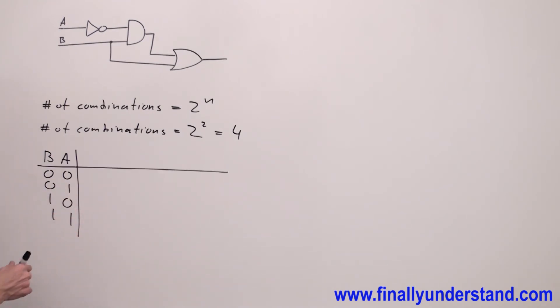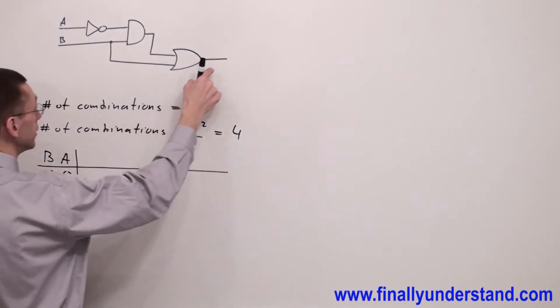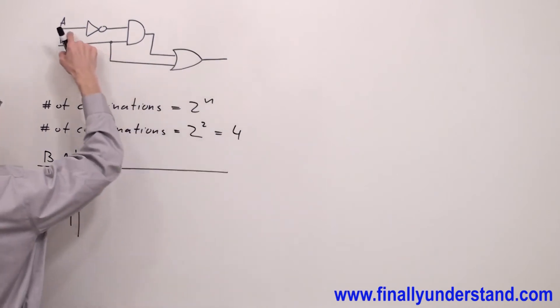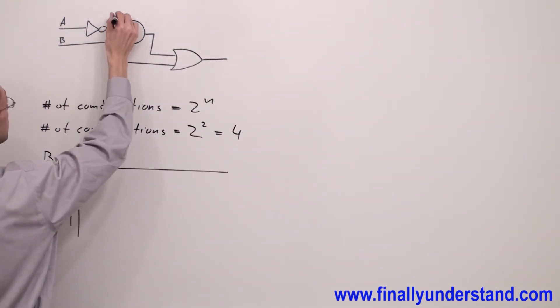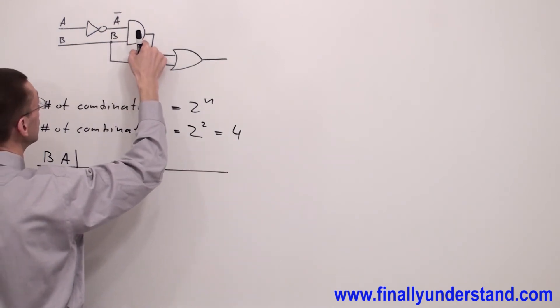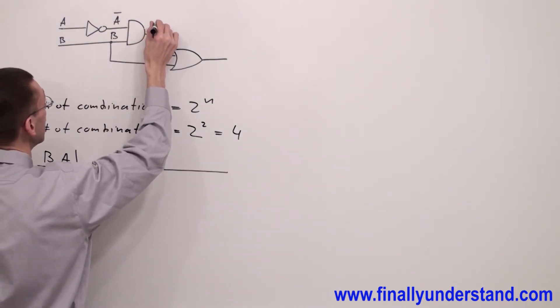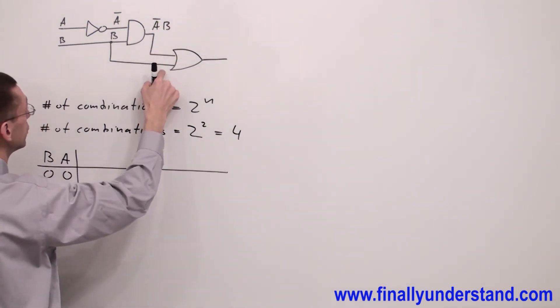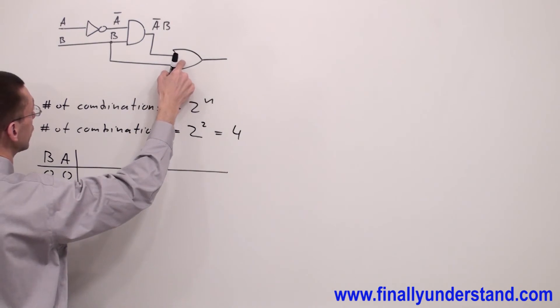Next, I'm supposed to find the output function for this circuit. I have A and after the inverter, I'm going to have A'. This is B. At the output of the AND gate, I'm going to have A'·B. At the input of the OR gate over here, I'm going to have B.